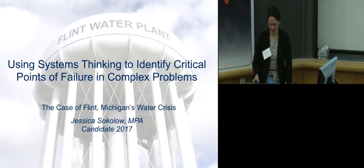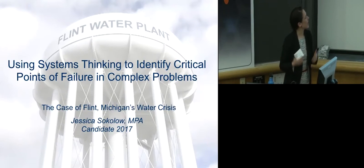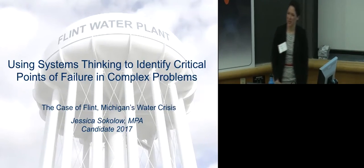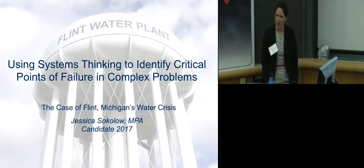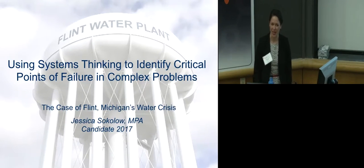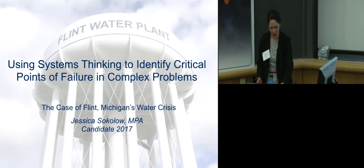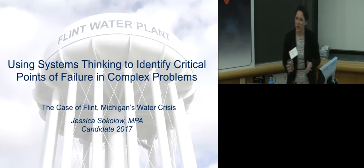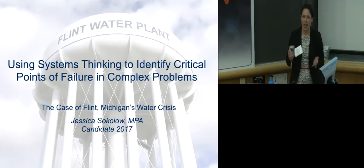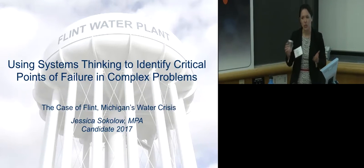Hi everyone, so I'm here to talk about how you can use systems thinking to identify critical failure points in complex problems. And we're going to be talking about the case of the Flint Michigan water crisis. This crisis is important to me because I'm a former drinking water regulator. I'm also a drinking water consumer, like all of you, and I'm grateful that I can go to my faucet and get safe, clean drinking water.